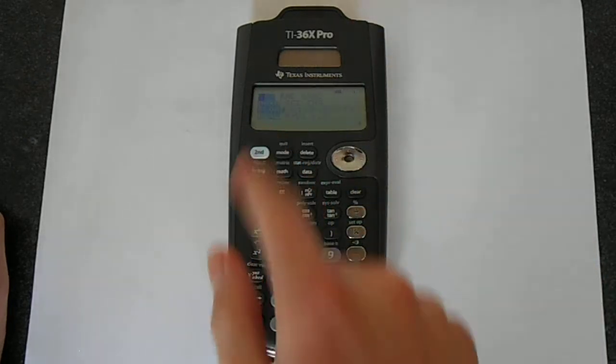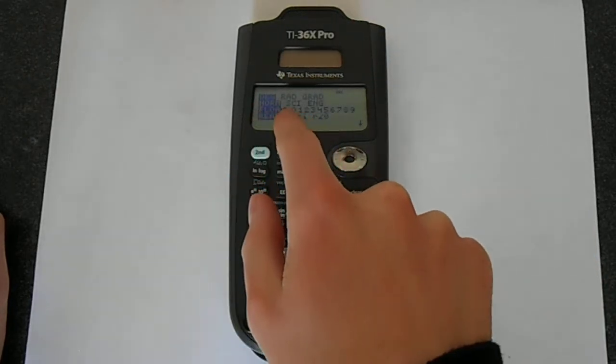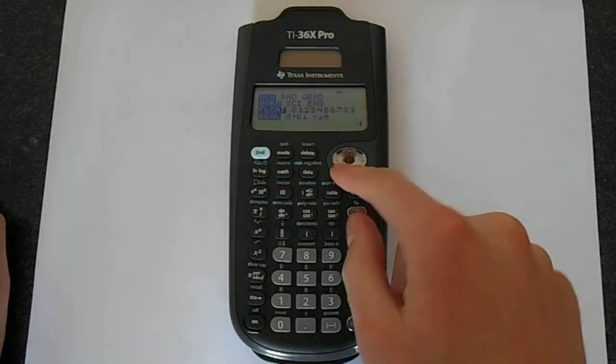And the way you do this is simply go to mode and you'll notice float down here and then the number 0 to 9, that's just the number of decimal places.